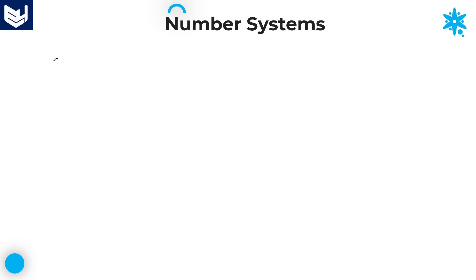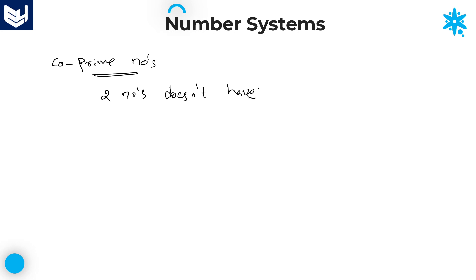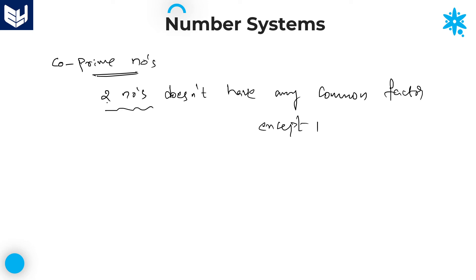Next is co-prime numbers. Co-prime numbers are two numbers that do not have any common factor except one. Note that I am not talking specifically about prime numbers — these can be any two numbers, whether both are prime, both are composite, or one of each. One is always excluded from the common factor condition because one is a factor of every number.